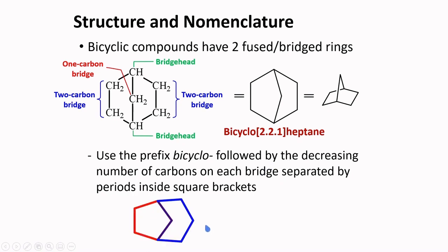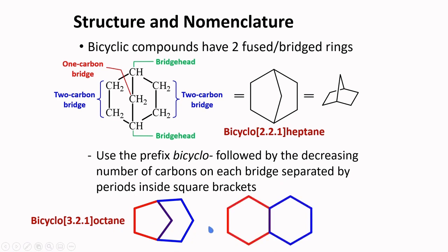For another example, the bridge heads connect a three-carbon bridge, a two-carbon bridge, and a one-carbon bridge, with 8 carbons overall — giving the name bicyclo[3.2.1]octane. A third compound has bridge heads connecting a four-carbon bridge, a four-carbon bridge, and zero carbons in the third bridge, with 10 carbons overall — named bicyclo[4.4.0]decane.